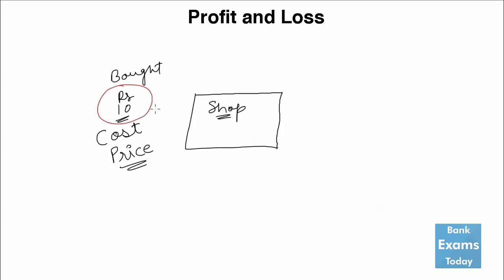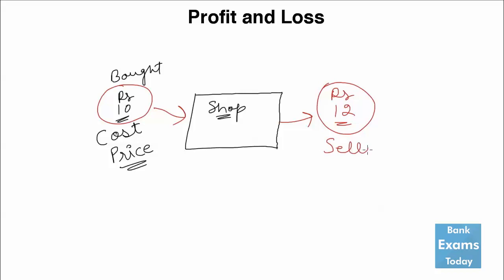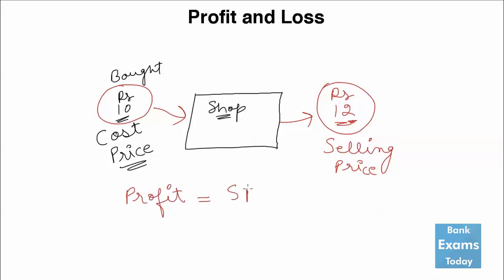Now you are selling one piece of pen for rupees 12. Rupees 12 is your selling price and that rupees 2 is your margin and that is your profit. So the formula to get profit is: Profit = Selling Price (SP) minus Cost Price (CP).